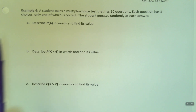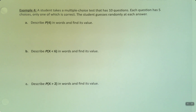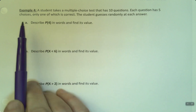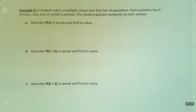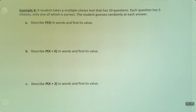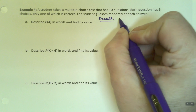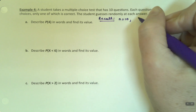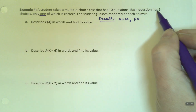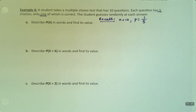We have that same student from the first example in this section. They're taking a multiple choice test that has 10 questions. Each question has five choices, only one of which is correct, and the student is randomly guessing at each answer. So n is 10, and the probability of success is one out of five, because only one of the five choices is correct.